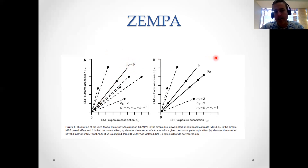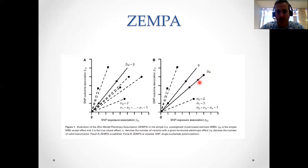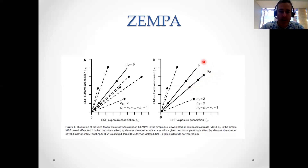Now let's consider the situation in panel B. Here we've got eight SNPs again but divided into five groups. The group with the largest number of SNPs has three SNPs, but if we were to take this as our estimate of the causal effect it would actually be wrong because ZEMPA is not satisfied in this situation.